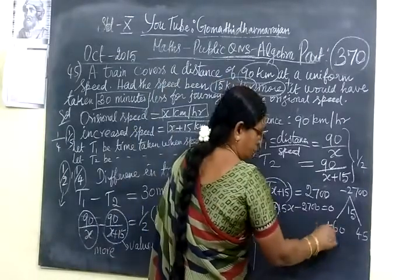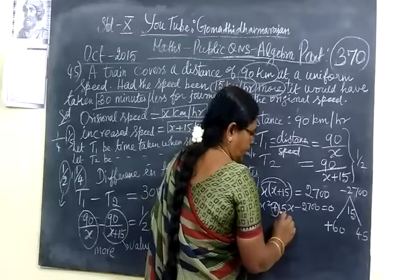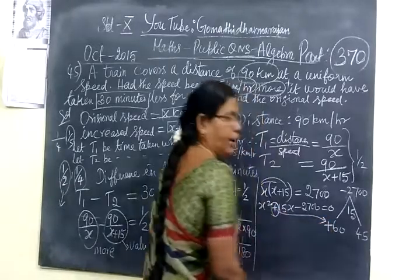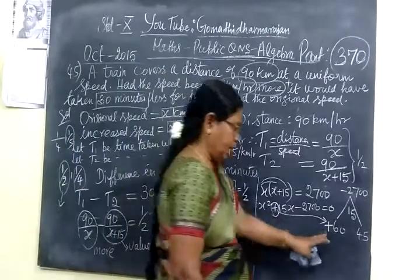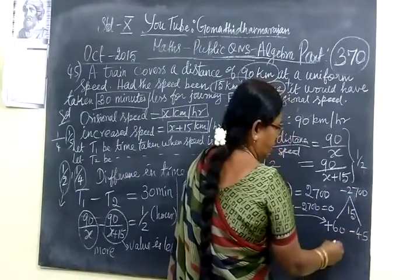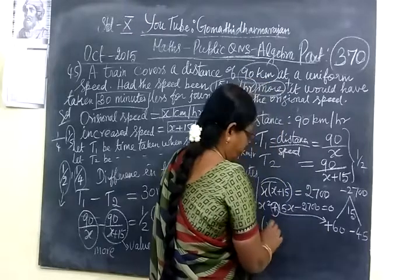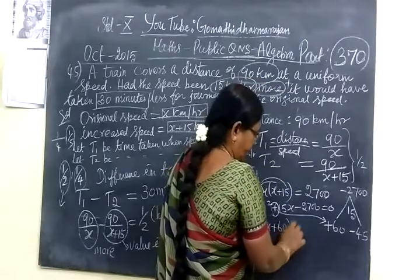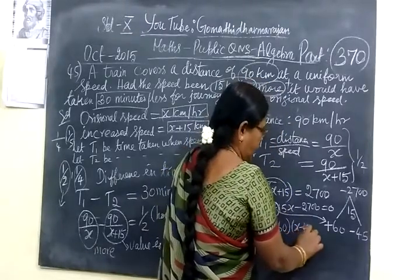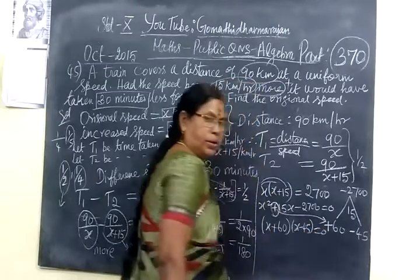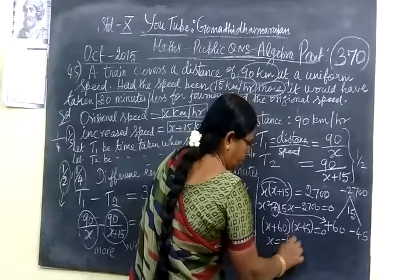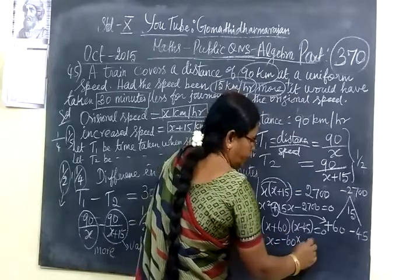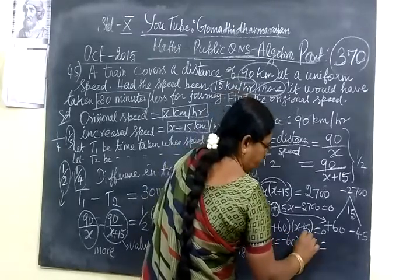Since the greater number sign is minus, it will come in the equation. So you get (x + 60)(x - 45) = 0. Then x minus 45 is equal to 0. So x equal to minus 60, this is not valid, and x equal to 45.